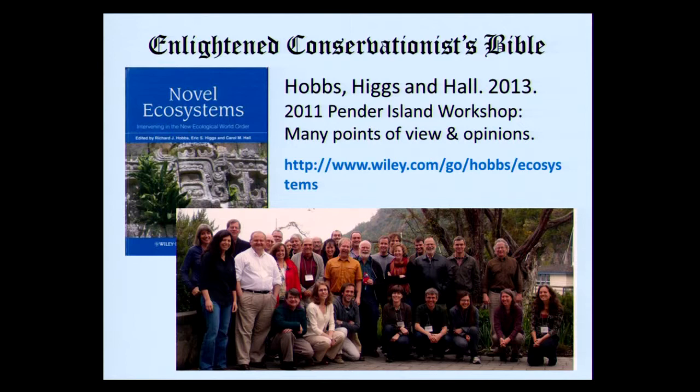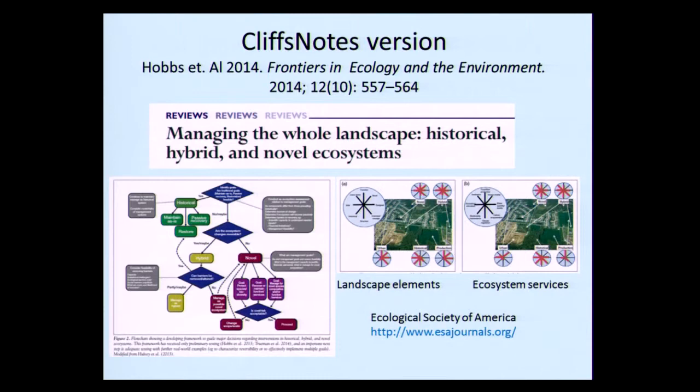For the conservationist's prayer, the Enlightened Conservationist Bible is the Hobbes book. If you can't afford the $70 book, you can get the Cliff Notes version, just published at the end of last year in Frontiers in Ecology and the Environment, and you can have your very own copy of the wonderful flow diagram.